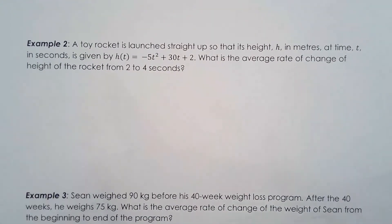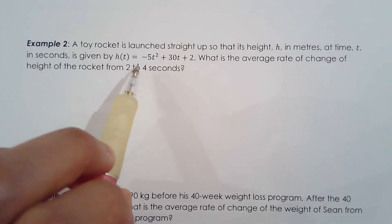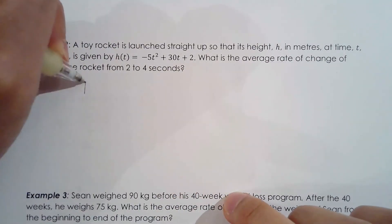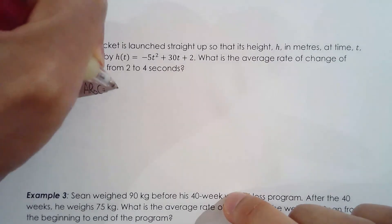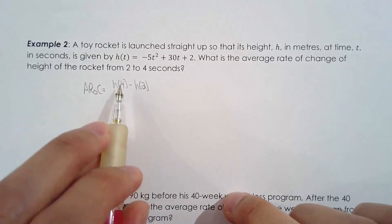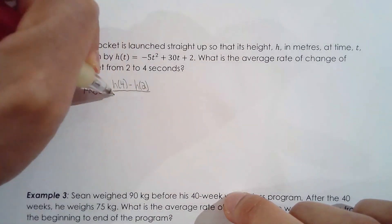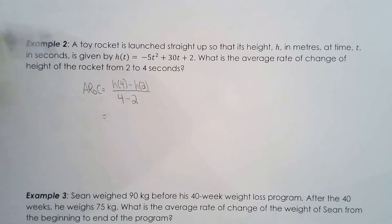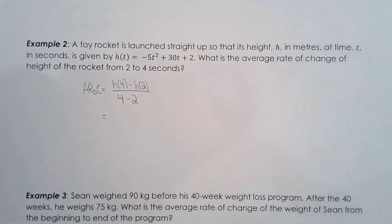Next example: a toy rocket is launched and height h is in meters. Find the average rate of change of height from 2 seconds to 4 seconds. Average rate of change = h(4) - h(2) / (4 - 2). These are just slope calculations — whenever someone asks for average rate of change, it's a slope calculation using two separate points.